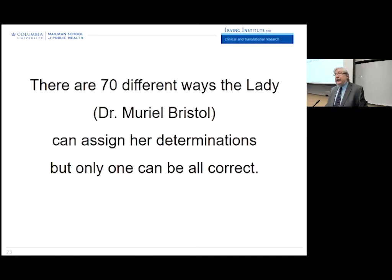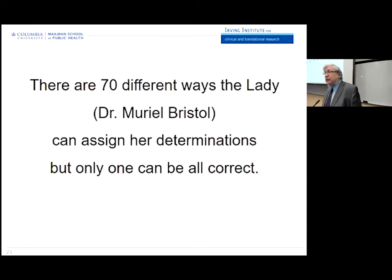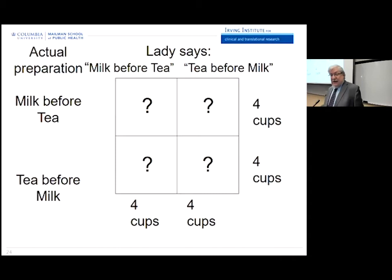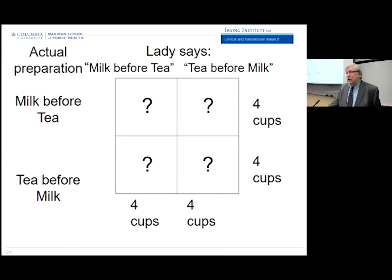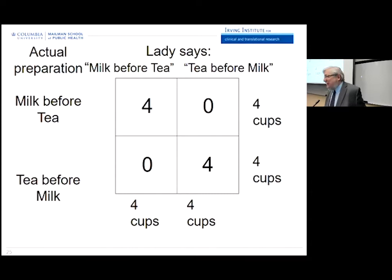When you do the calculation, eight choose four — the binomial coefficient — counts the number of ways the lady could make her assignment matching four and four cups. Only one of those 70 ways could the lady be correct in every one of the eight cups. Fisher knew that if she made one mistake, she would necessarily have to make two mistakes, because if the upper left-hand corner had a three instead of four, there'd be a mistake in both the neighboring row and column. We never knew from reading his textbook what actually happened, but the answer was: she got them all right. Fisher was so annoyed he never wanted to mention that — he had a somewhat irascible character.